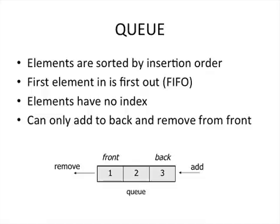So a queue is a data structure in which, just like stacks, elements are sorted by insertion order. However, in queues, the first element that you put in is the first one that comes out. Again, elements have no indexes, so we can't access an element in the middle of a queue. We can only add to the back and remove from the front.